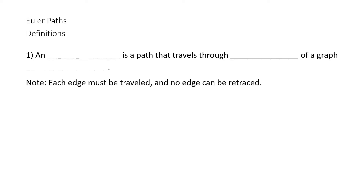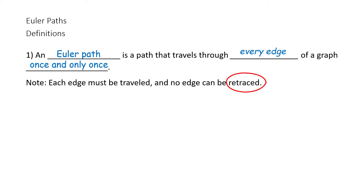Euler Paths Definitions. One, an Euler path is a path that travels through every edge of a graph once and only once. Note: each edge must be traveled and no edge can be retraced.